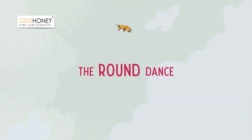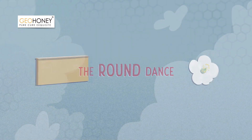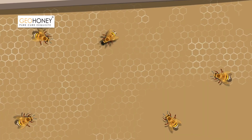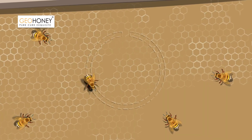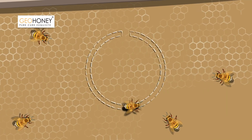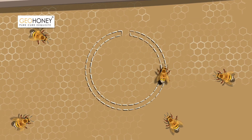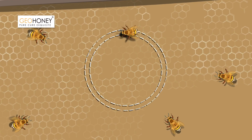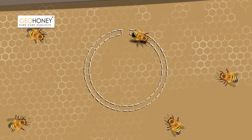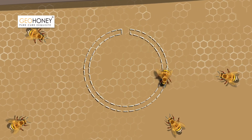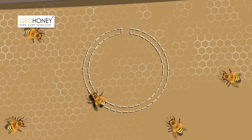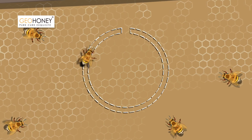The Round Dance is a form of dance that communicates distance, but not the direction of a food source. It is performed by forager bees by running around in narrow circles, suddenly reversing direction to her original course.